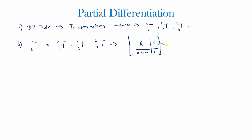The position vectors from that transformation matrix would have three components: px, py, and pz, and these three show the position of the tool or final frame relative to the base of the robot.